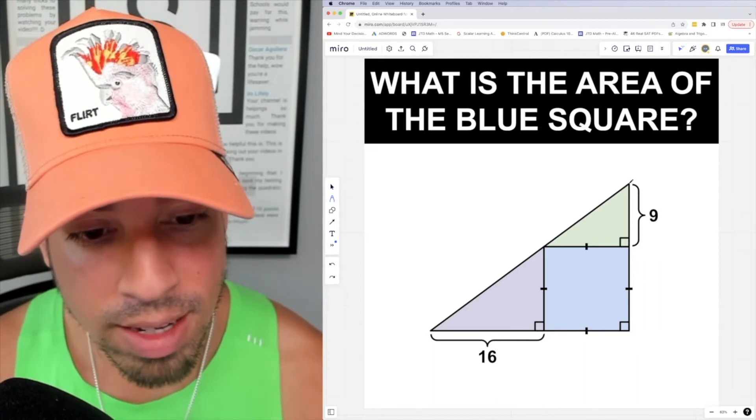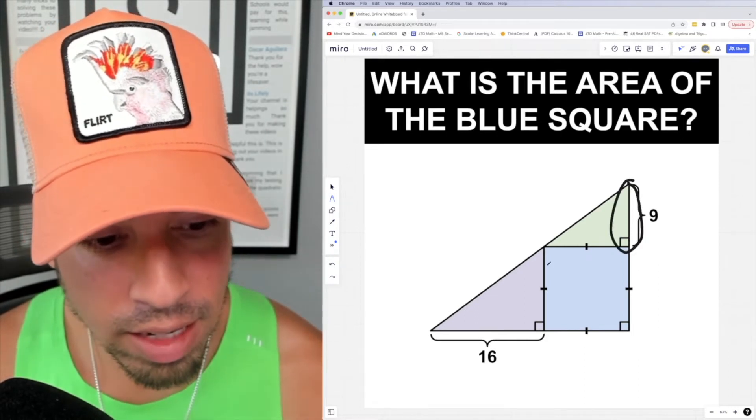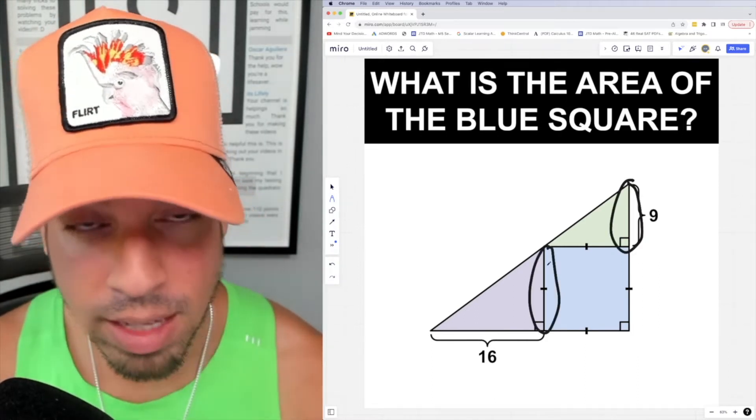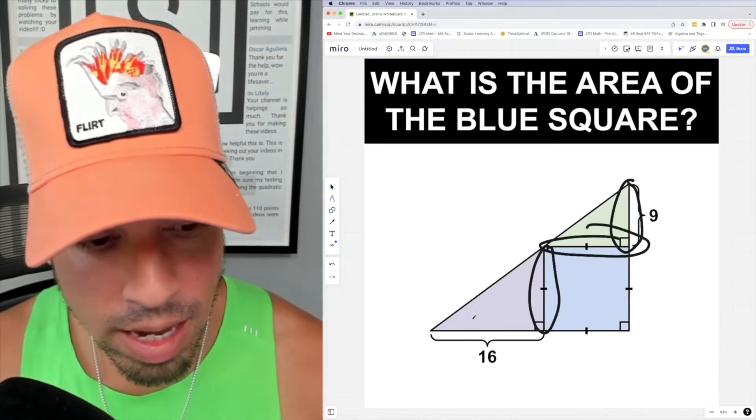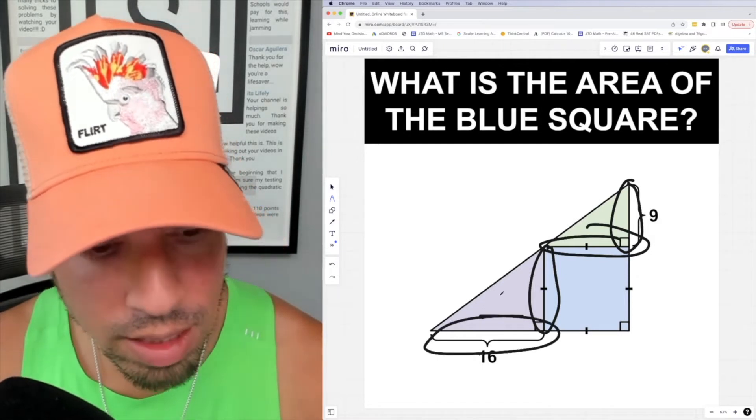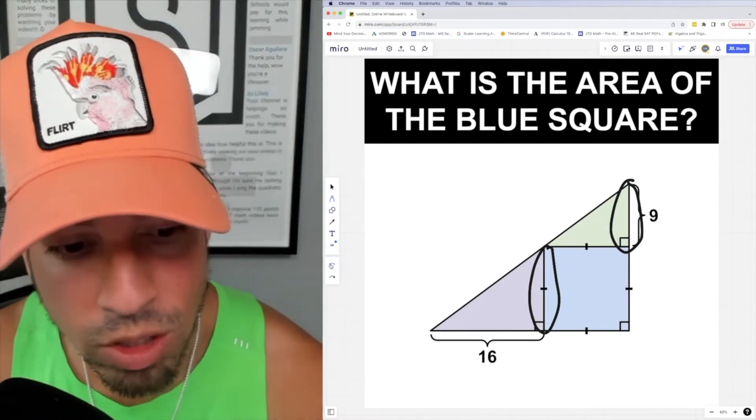The cool thing about that is this little leg is related to this little leg (I'm saying little relative to each triangle). Likewise, this medium leg is proportionate or related to that medium leg, so what we can do...